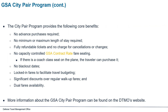The city pair program provides the following core benefits: no advance purchases required; no minimum or maximum length of stay required; fully refundable tickets with no charge for cancellation or changes; no capacity-controlled GSA contract rate fare seating, meaning if there is a coach class seat on the plane, the traveler can purchase it; no blackout dates; locked-in fares to facilitate travel budgeting; significant discounts over regular walk-up fares; and dual fare availability. More information about the GSA city pair program can be found on the DTMO's website.